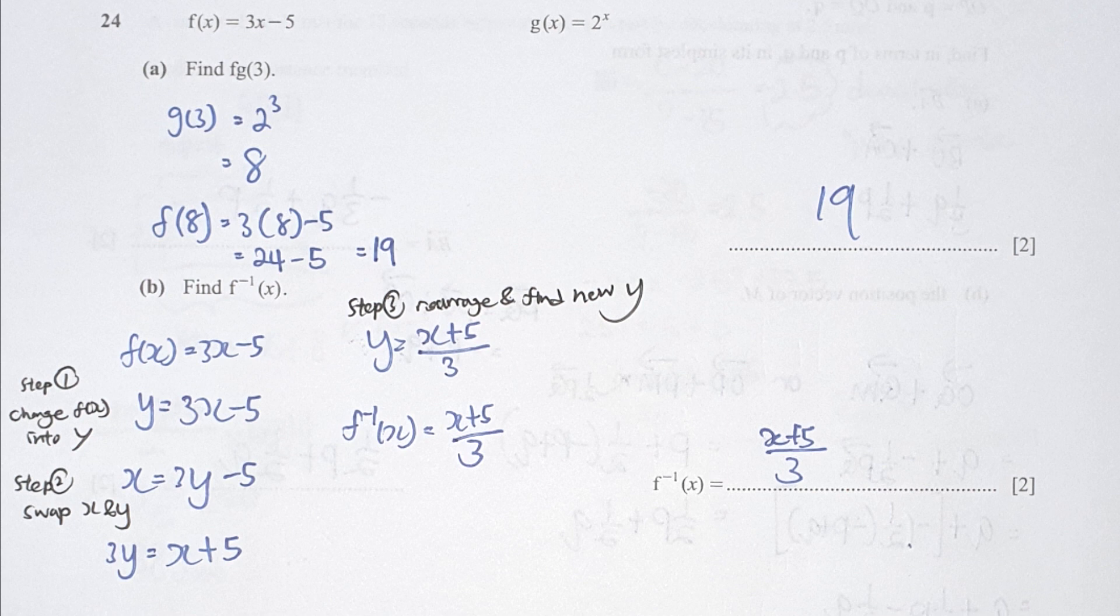For section B, to calculate the inverse function of F, there's three steps for you to follow. First, change Fx into Y. Swap their position. Then you will get X equals to 3y minus 5. Then you rearrange it and identify your new Y as X plus 5 over 3.